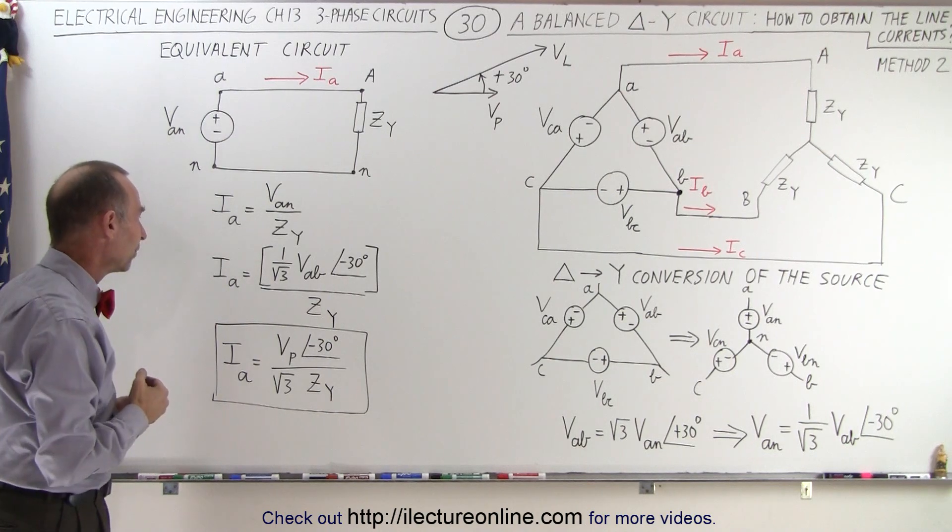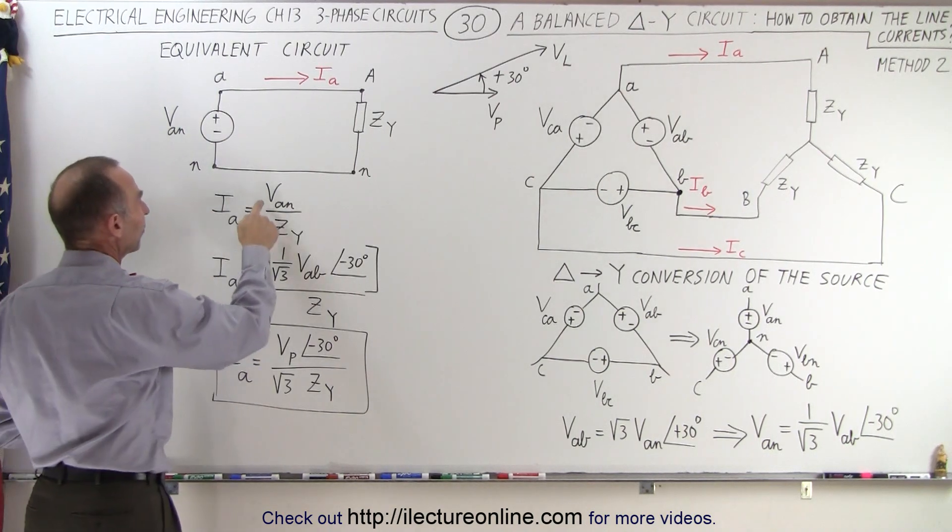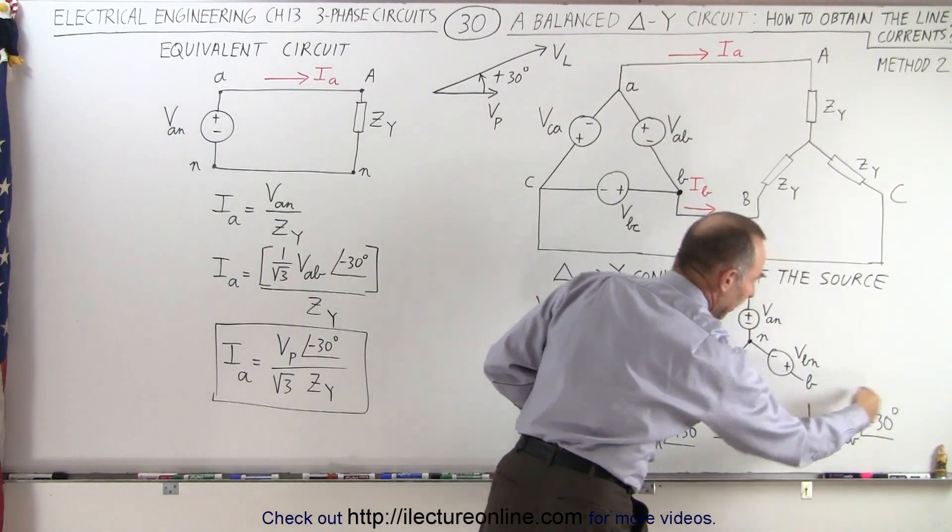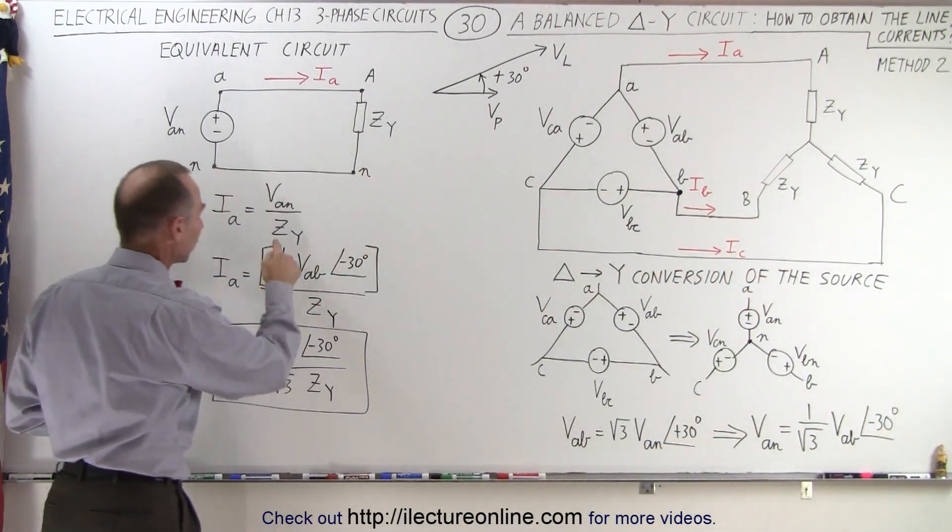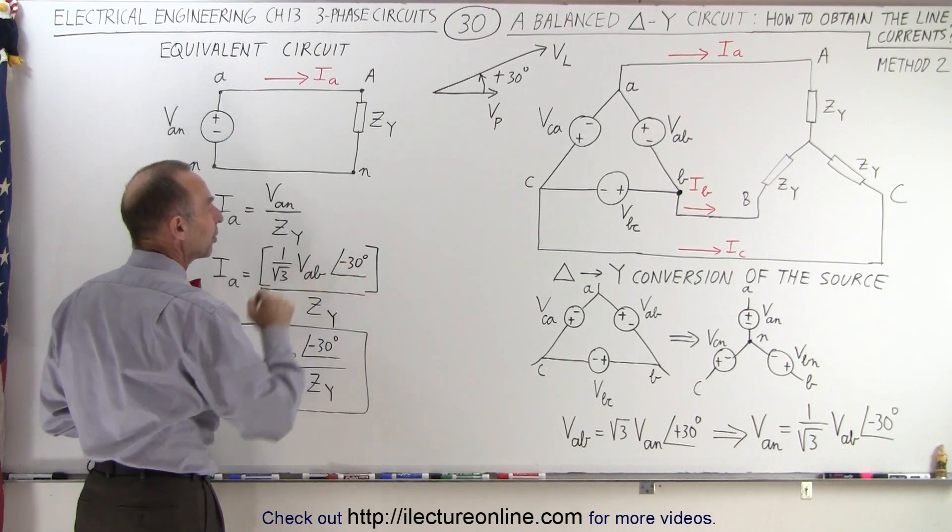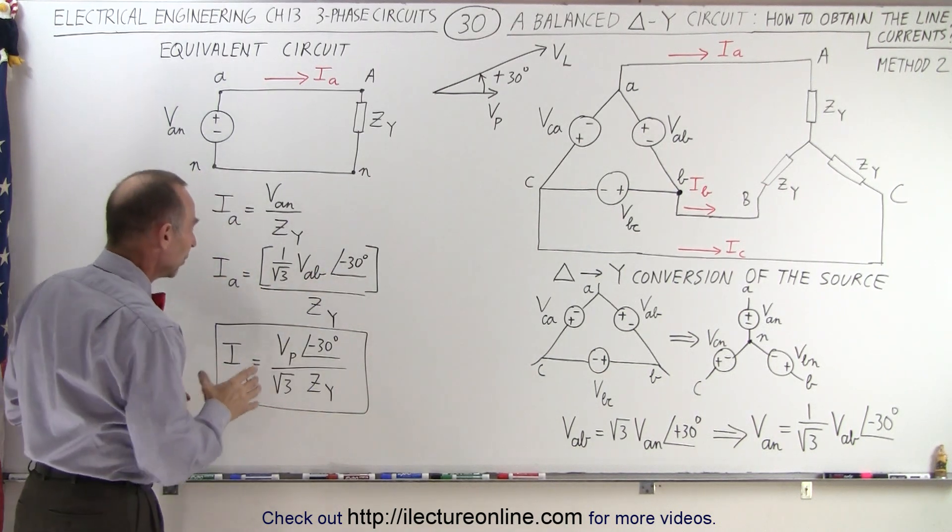And so then we realize that VAn can then be replaced by this quantity right here, so it's equal to 1 over the square root of 3 times VAb with a phase angle of minus 30 degrees. And then we take that, and we say that this is now the phase voltage of the original circuit.